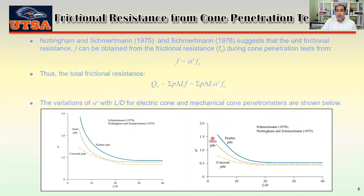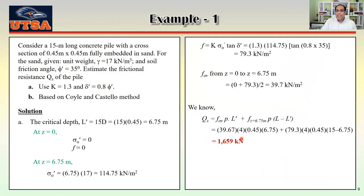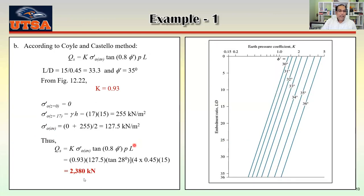In the previous method we got 1660 kN; here we get 2380 kN — a significant difference. This is very common because there is no exact mathematical derivation for this behavior. Every equation here is an empirical relationship based on field observations, so you can expect this kind of difference across methods.